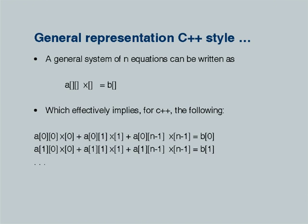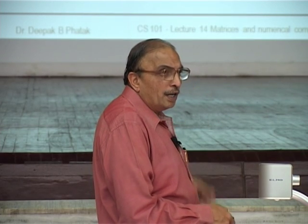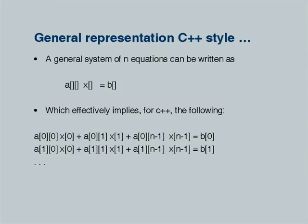The program uses the matrix notation AX equals B in C++ style. The coefficient matrix is A, the right-hand side is B, and the variables are X. For C++: A[0][0]*X[0] + A[0][1]*X[1] + ... + A[0][N-1]*X[N-1] equals B[0], and so on for each row. We must remember the 0-indexed notation: indices vary from 0 to N-1.